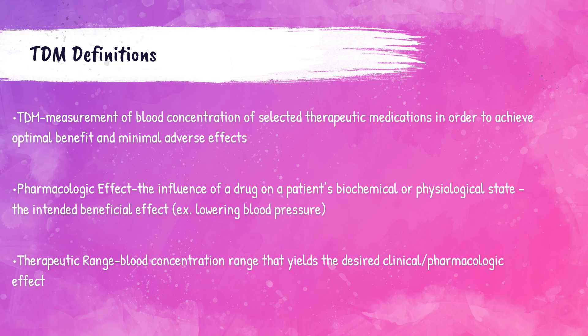A pharmacological effect is the intended beneficial outcome of a specific medication. For example, if a patient has high blood pressure and is given a blood pressure medication, that medication's pharmacological effect is lowering the blood pressure. A therapeutic range of a medication is the concentration of that medication present in the blood that produces the pharmacological effect. A steady state is when the amount of drug put into the body equals the amount of drug that is being eliminated, meaning the concentration of the drug will remain the same in the body after the body is given the drug at a constant rate.